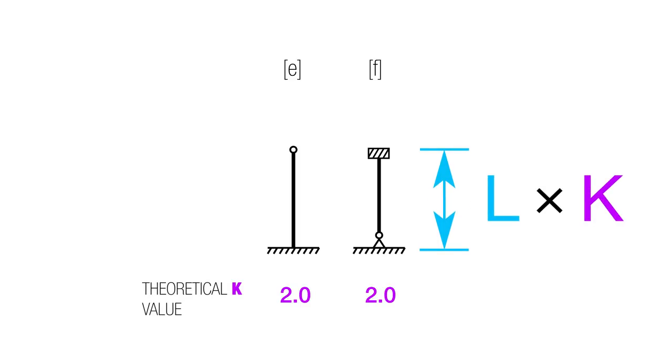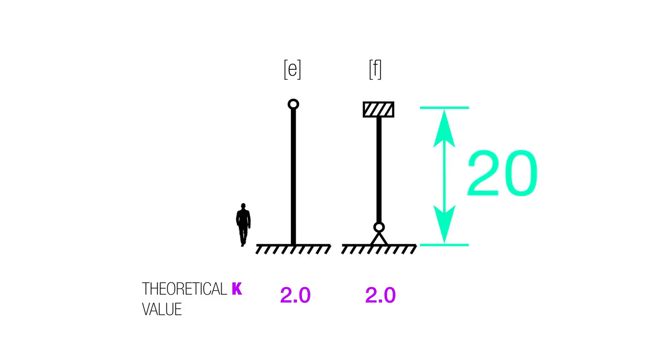But look at these two here. These two have a theoretical K value of 2, which means that we're gonna have to take a 10 foot column if we have one of these and it's gonna behave like a 20 foot column. So we're gonna multiply it by 2.